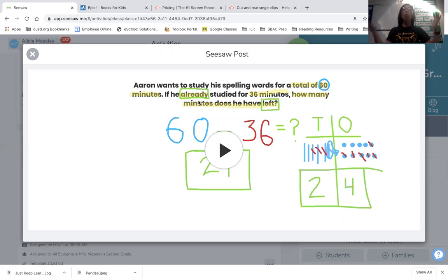It says, if he already, that's the keyword I want to talk about. If he already studied for 36 minutes, if something already happened, it's done. That means we don't have to worry about that anymore. So he studied for 36 minutes. We know he needs to study for 60 minutes. He already took care of 36 minutes. When it says how many left, that's helping us know that we're going to have to do subtraction. 60 minutes, and we're going to subtract that 36 minutes that he already did.